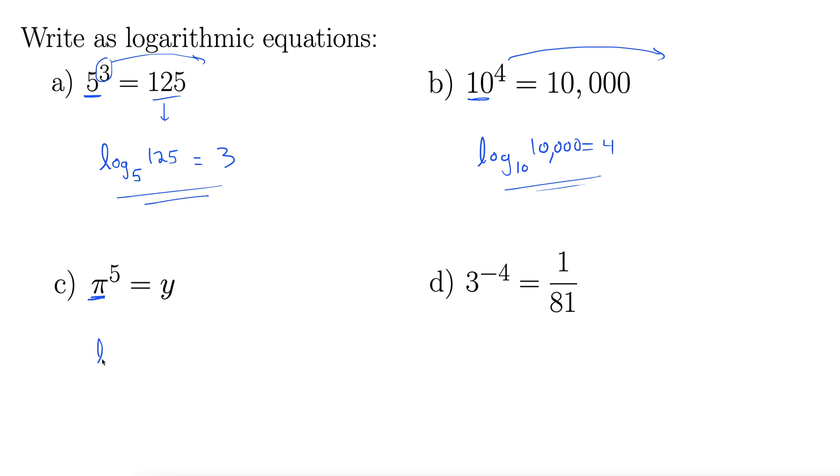Our pi becomes the base, so this is strange, you don't see this very much, but log base pi. The 5 goes way out, so equals 5, and then back inside we have this y. Log base pi of y equals 5.